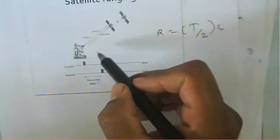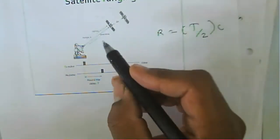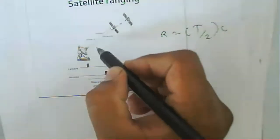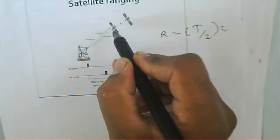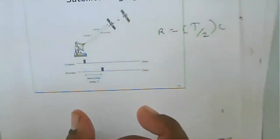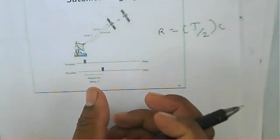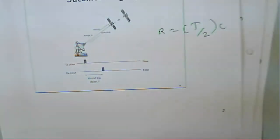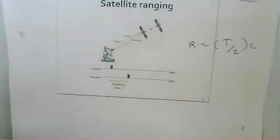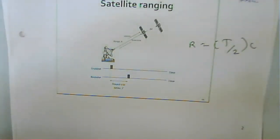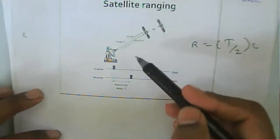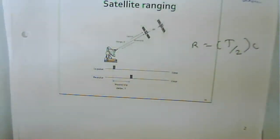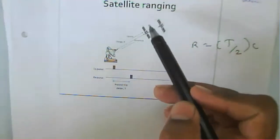There are drawbacks in using pulses for measuring range. If the pulse has a large width, the resolution is not good. Therefore, short pulses are needed. The duration of the pulse received at the Earth must be considered carefully to correctly determine the satellite's position.